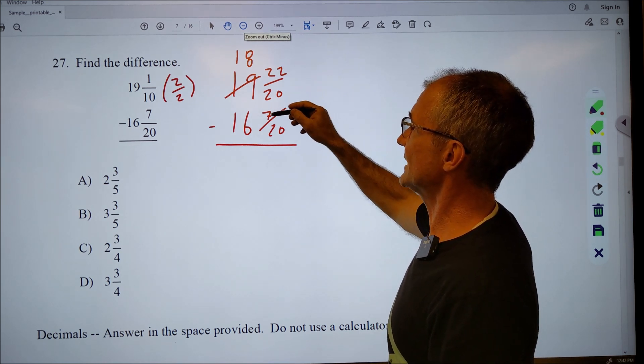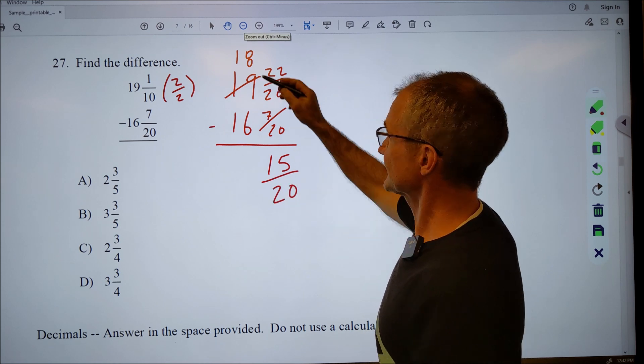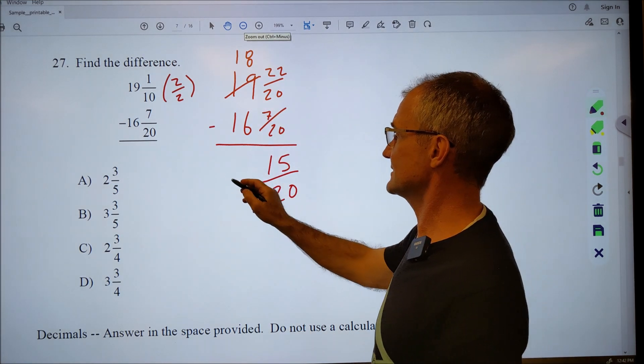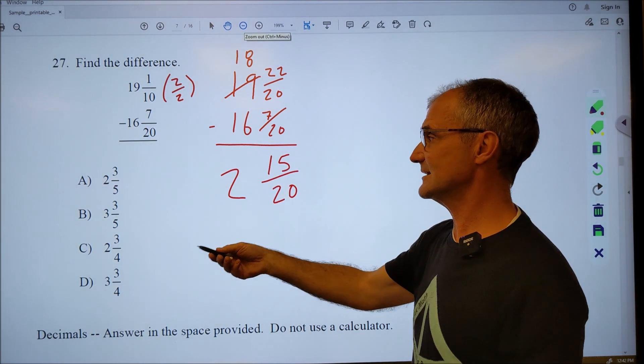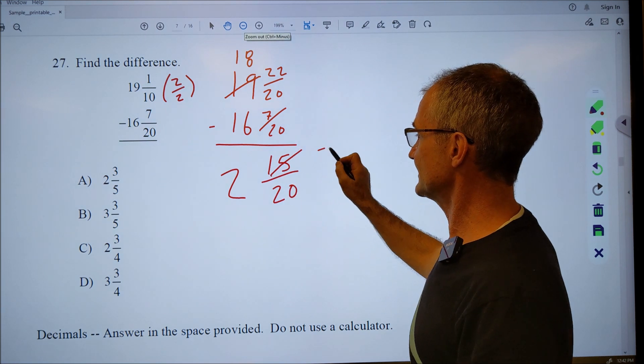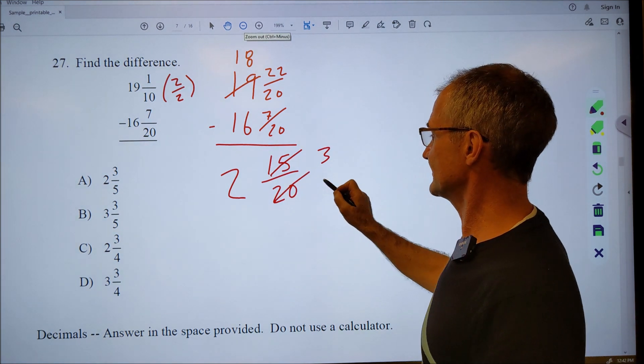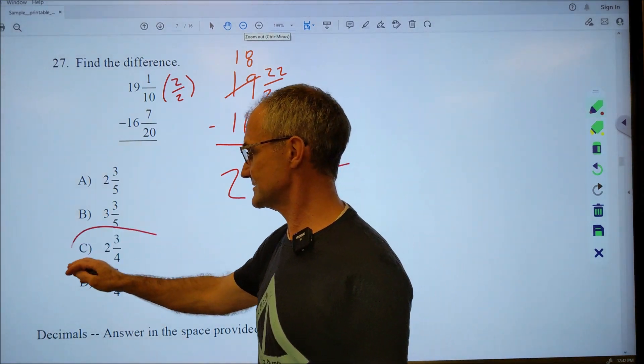Then I have twenty two minus seven, fifteen twentieths. Eighteen minus sixteen is two. So I have two and fifteen twentieths. I don't see that there, but it's not a reduced fraction. Five goes into fifteen three times. Five goes into twenty four times. So I have two and three quarters, answer C right there.